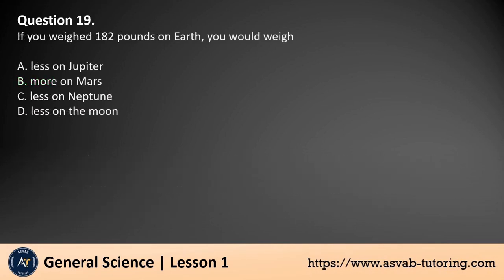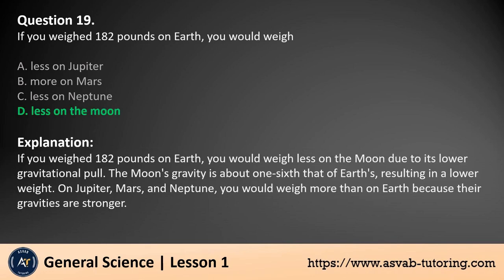Question 19. If you weighed 182 pounds on Earth, you would weigh: a. Less on Jupiter. b. More on Mars. c. Less on Neptune. d. Less on the Moon. The answer is d. If you weighed 182 pounds on Earth, you would weigh less on the Moon due to its lower gravitational pull. The Moon's gravity is about one-sixth that of Earth's, resulting in a lower weight. On Jupiter, Mars, and Neptune, you would weigh more than on Earth because their gravities are stronger.